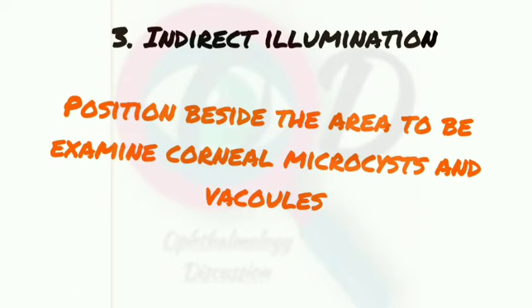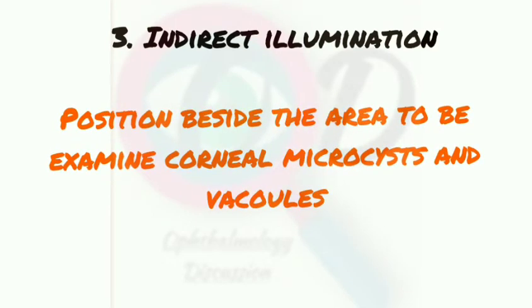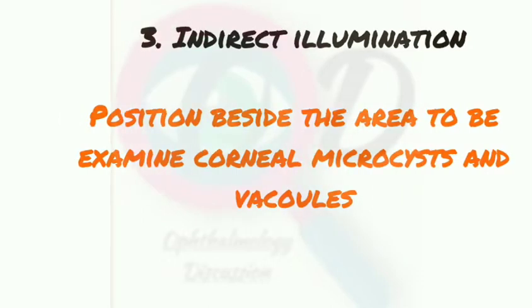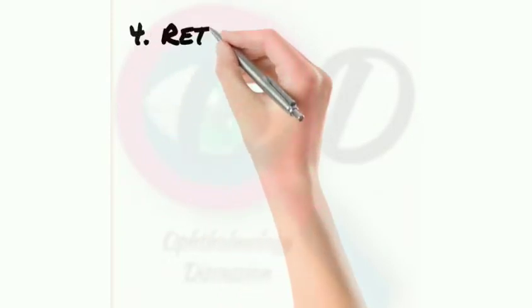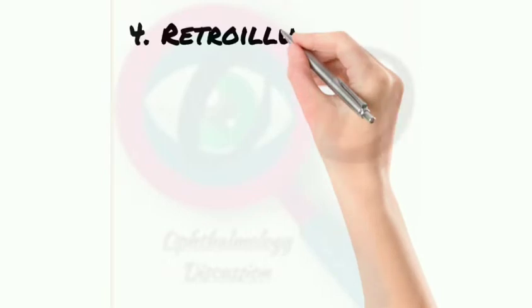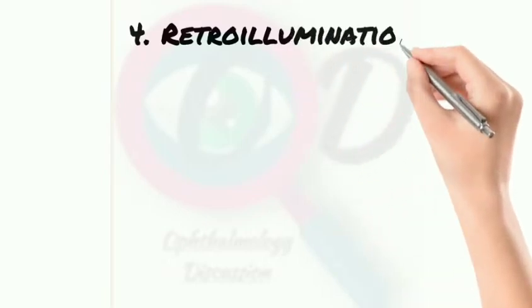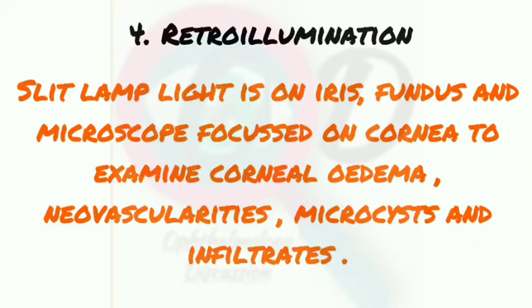The third type is indirect illumination, where the illumination is positioned beside the area to be examined. This is used to visualize corneal microcysts and vacuoles — whenever you need to see small particles on the cornea, you use indirect illumination.